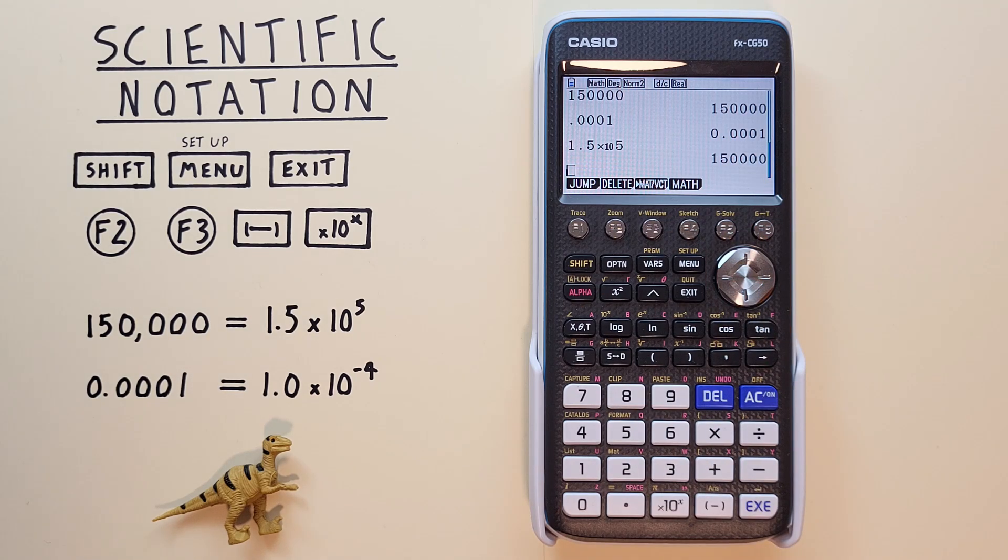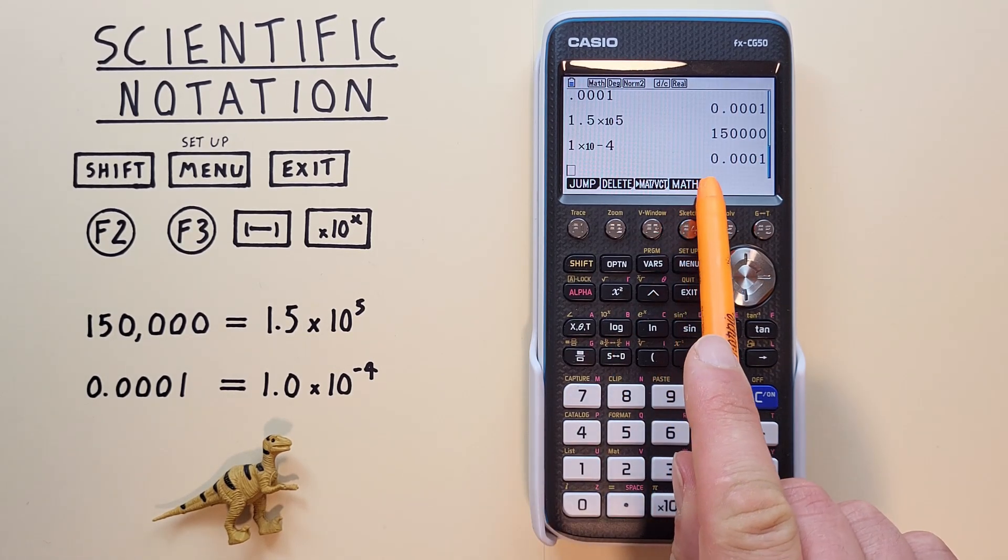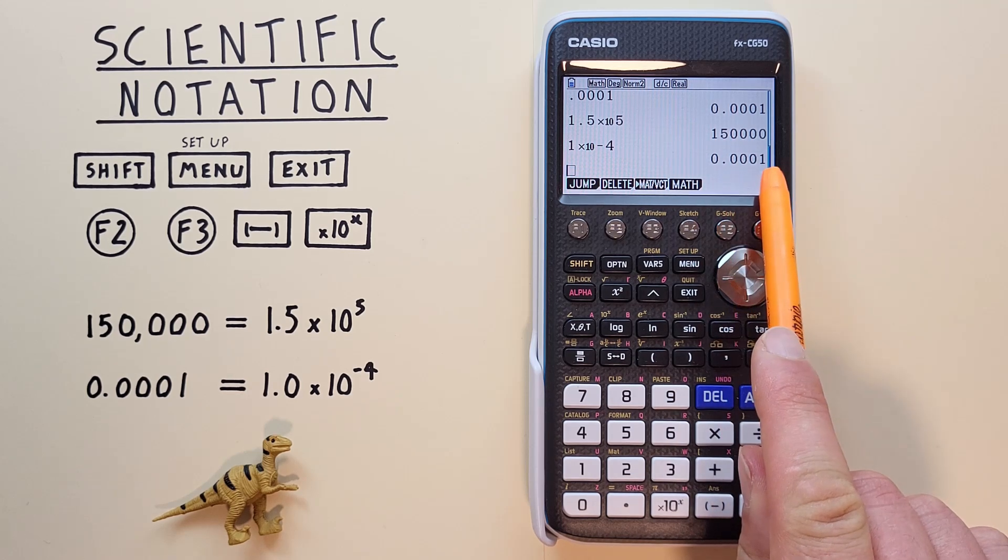Again, we can do this with the small numbers. If we enter 1 times 10 to the X, and then the negative, 4, hit EXE, we see we get 0.0001, which is correct.